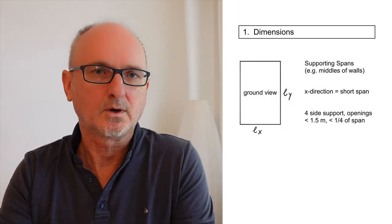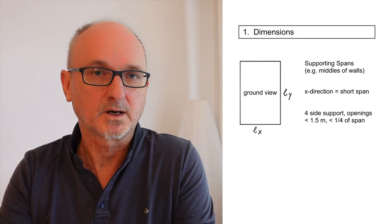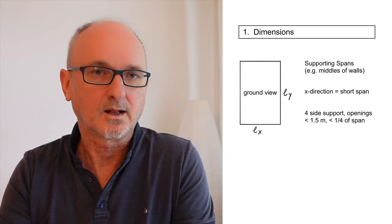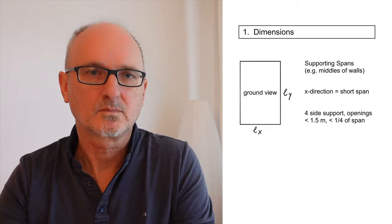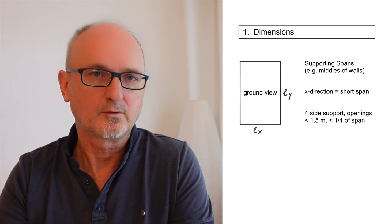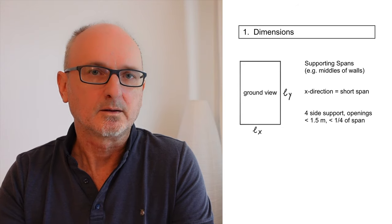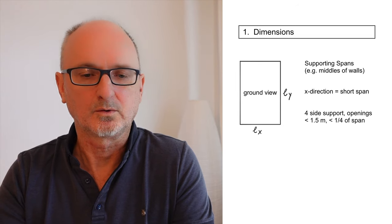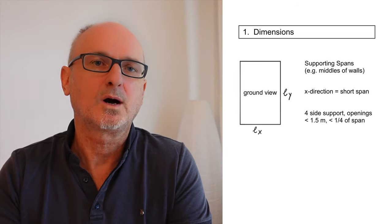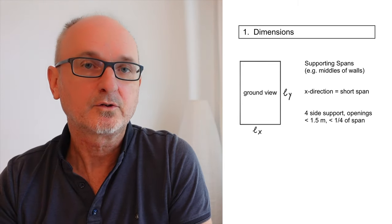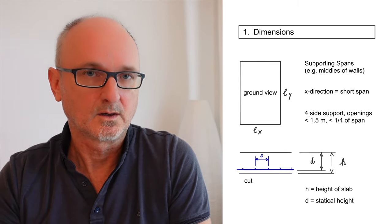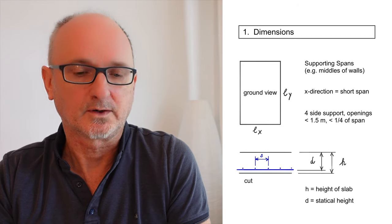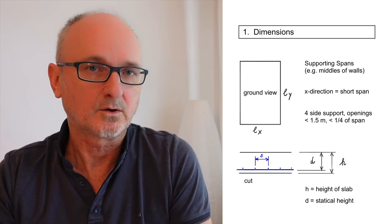For the dimensions we begin with the spans. In a ground view you have span LX and span LY. We always use LX as the shorter span. For a four-side supported slab, the span ratio should be between 0.5 and 2 — meaning the longer span should not be more than twice the shorter span. The next dimension needed is the height of the slab.